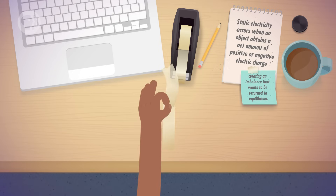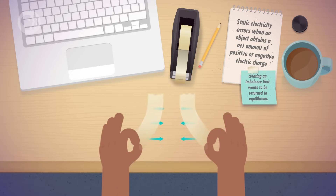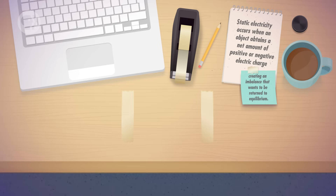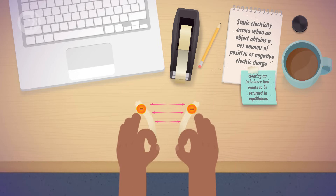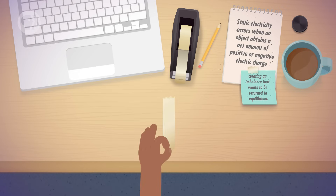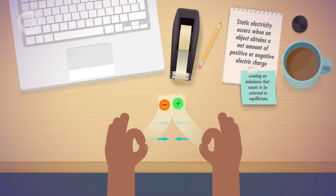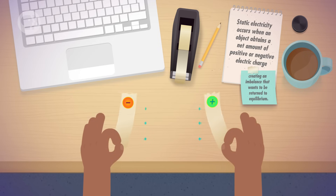But try this – stick one on top of the other, rip the pair off the table, then separate the pieces. They're no longer repelled – now they're attracted to one another. In the first scenario, both pieces of tape stole negative charges from the table, and since like charges repel, the pieces moved away from one another. In the second scenario, one piece of tape stole negative charges from the other, leaving the pieces with opposite overall charges, making them attract.